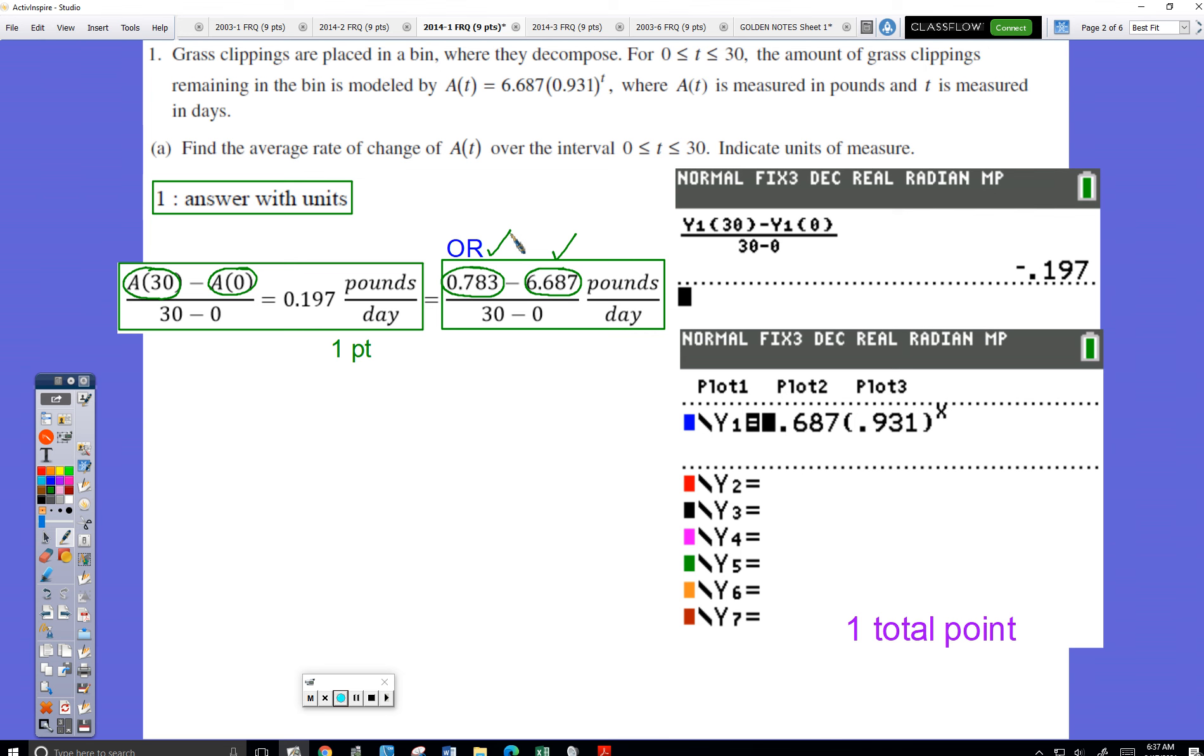So I divide that by the time period. That tells me on average I'm losing 0.197 pounds per day.